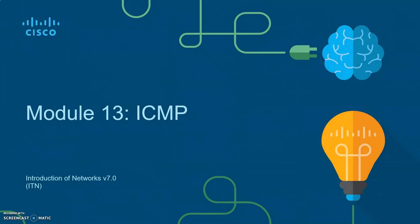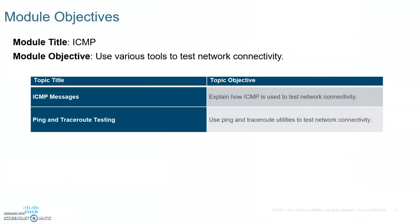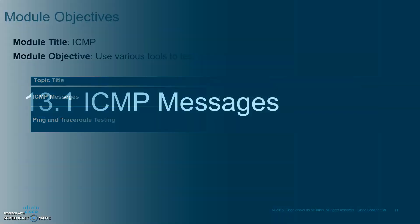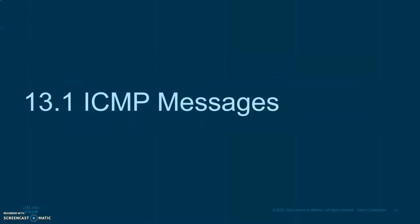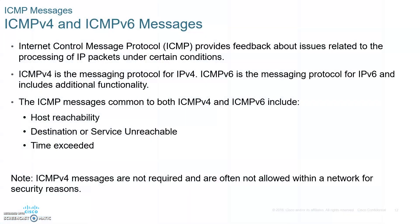ICMP provides feedback about issues related to the processing of IP packets under certain conditions. In the early days, when TCP/IP was invented, there was no mechanism to tell if your packet got lost or to let you know if some links are down. There was no control mechanism whatsoever, so if you transmitted and your packet got lost, you didn't even know if it got to the destination or not.